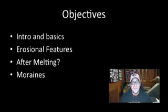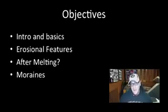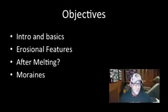This video is going to cover the basics of alpine glaciers. Alpine glaciers are glaciers that are exclusively in the mountains. We'll talk about continental glaciers a little bit later. During this video, we're going to mainly focus on the erosional features of alpine glaciers and what happens after the ice melts — including what moraines are.